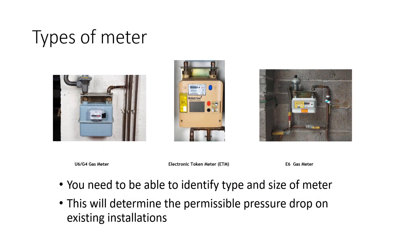When working on a system connected to the gas pipework that has a meter fitted, the first thing you need to know is what type of meter it is. Depending on what type of meter you've got, that determines the amount of drop in pressure you're allowed during your two-minute tightness test. Different meters allow different drops — this is called the permissible pressure drop — and it tells you how much pressure your system is allowed to lose within the two-minute test before it fails.